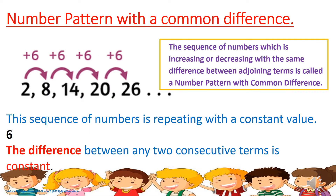Let's learn number patterns with a common difference. Look at the given number pattern: 2, 8, 14, 20, 26. The teacher has separated each term by putting a comma, and at the end of the number pattern, three dots show that it is continuing. When you write a number pattern, you have to place three dots at the end to show that it is increasing or just continuing.